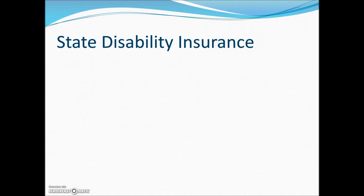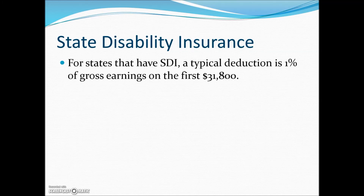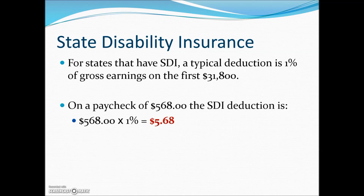Some states have a state disability insurance program. A typical deduction is 1% of gross earnings on the first $31,800. There may be some variation from state to state, but if an employee is injured and unable to work, the program pays the employee during the period of disability. For example, if an individual has gross earnings of $568, their SDI deduction of 1% would be $5.68 deducted from their paycheck.